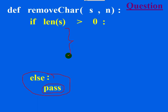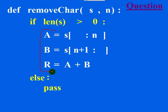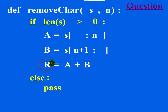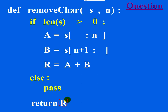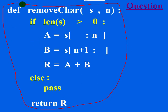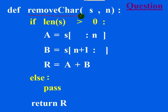Now write the code we already derived. The string variable r does not contain the nth index character. After calculating the result, return r to the main function so the answer can be displayed there. You don't need to write the main function for the theory exam, so this much is enough. This completes the function.